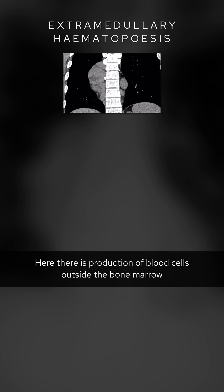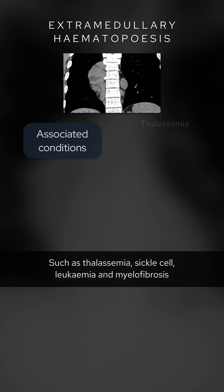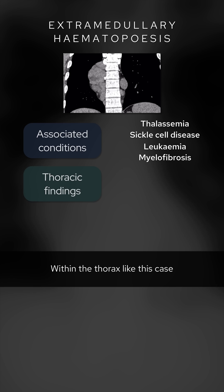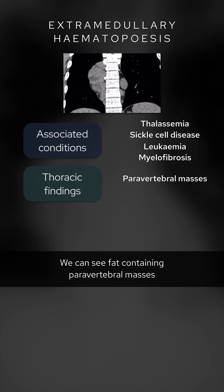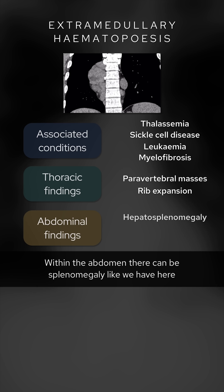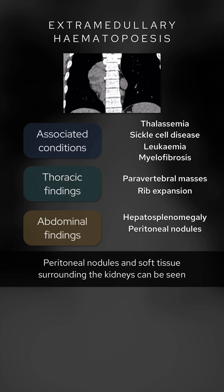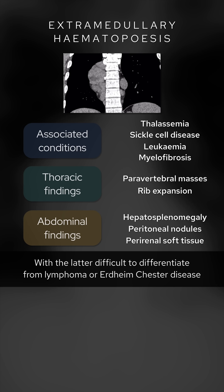In extramedullary hematopoiesis, there is production of blood cells outside the bone marrow. Any condition where there is inadequate production of blood cells can predispose to this — such as thalassemia, sickle cell, leukemia, and myelofibrosis. Within the thorax, as in this case, we can see fat-containing paravertebral masses, and sometimes even rib expansion. Within the abdomen there can be splenomegaly like we have here, and also hepatomegaly. Peritoneal nodules and soft tissue surrounding the kidneys can be seen, with the latter difficult to differentiate from lymphoma or Erdheim-Chester disease.